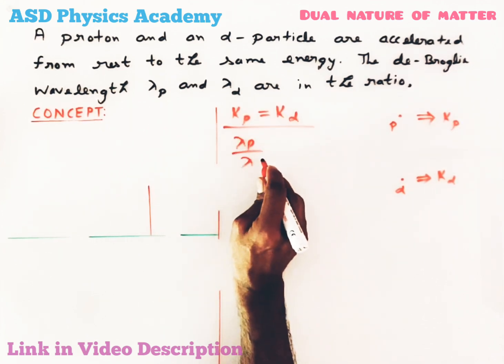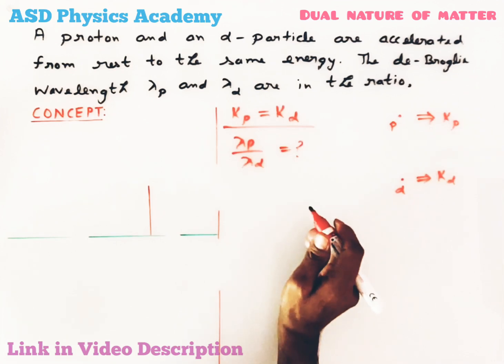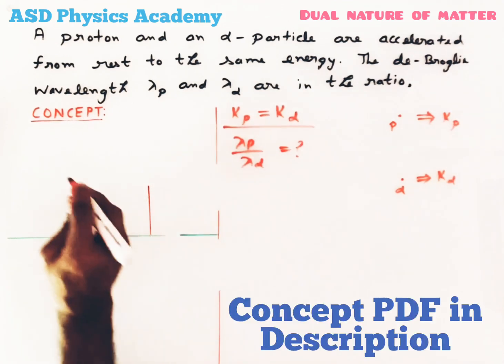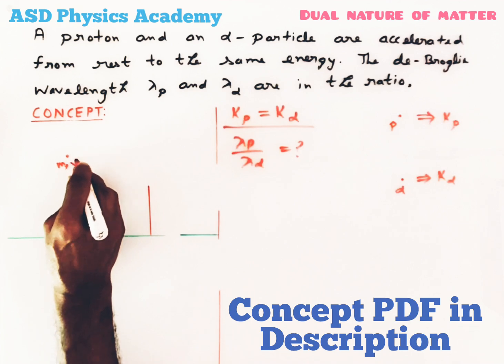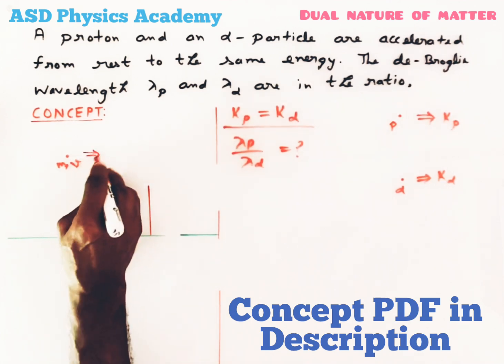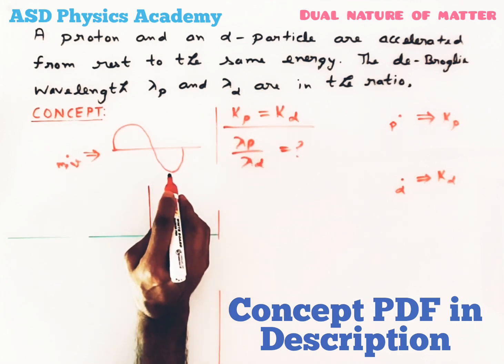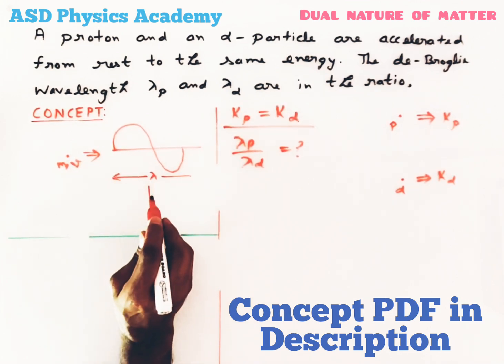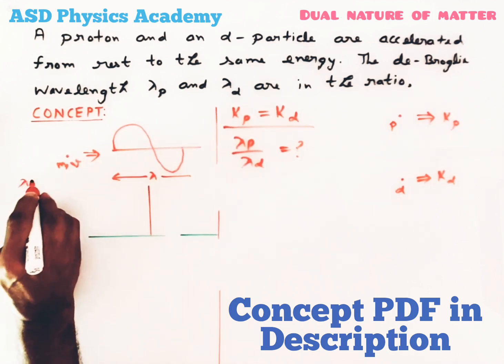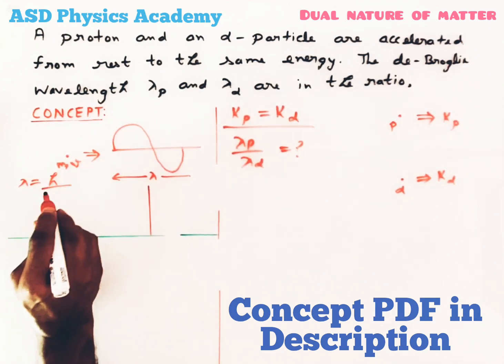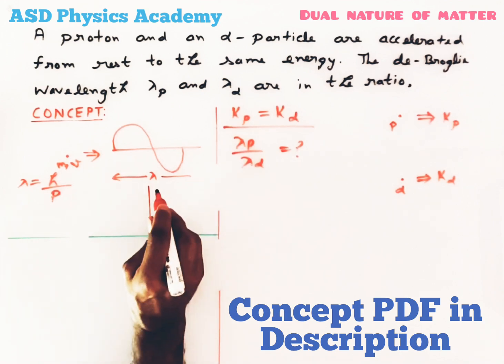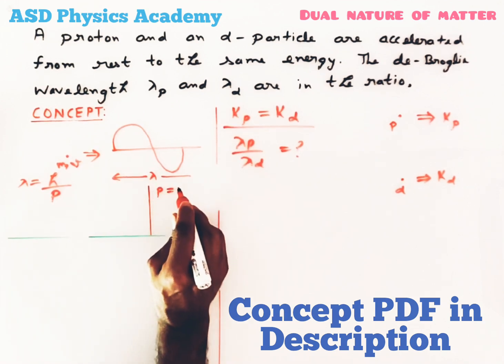According to the question, energy of proton and alpha particle is same, and we have to calculate λp by λα. Now the concept is: whenever any particle of mass m is moving with speed v, then this particle behaves as wave also. This wave is called matter wave and the wavelength associated with this matter wave is given by λ = h/p.